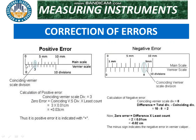For the calculation of positive error: the coinciding division number is 3. We multiply by the least count — the least count is 0.01 mm, which is 0.001 cm. So positive error = 3 × 0.01 mm = 0.03 mm. If the total reading is, for example, 5 cm, then the corrected reading is 5 + 0.03 cm.